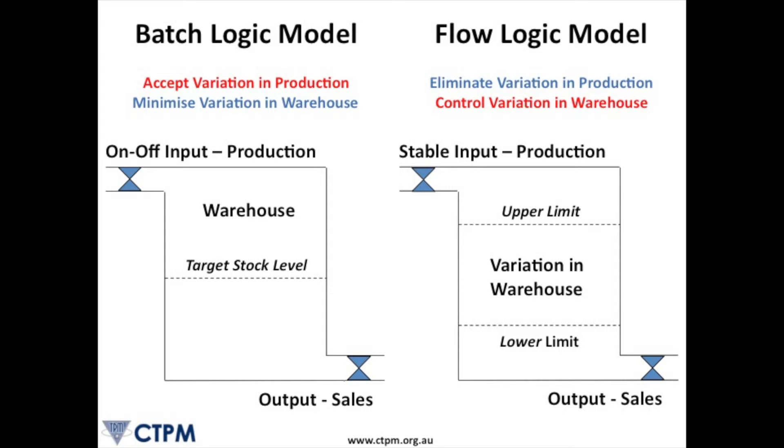Moving from batch logic thinking to flow logic means rather than focusing on improving how production scheduling is currently done, flow logic changes the way it is done. Flow is the foundation of the Toyota Production System, as it was the only way Toyota could stop the fire-fighting in their plants and supply chains to allow more time to be devoted to ongoing continuous improvement.